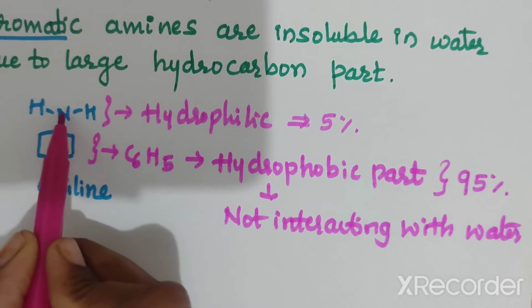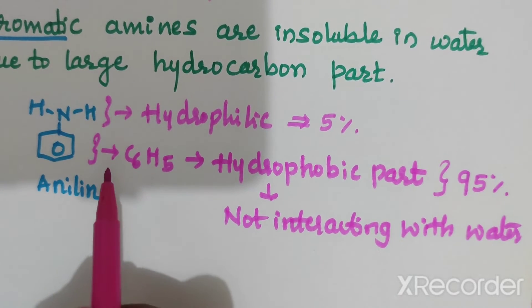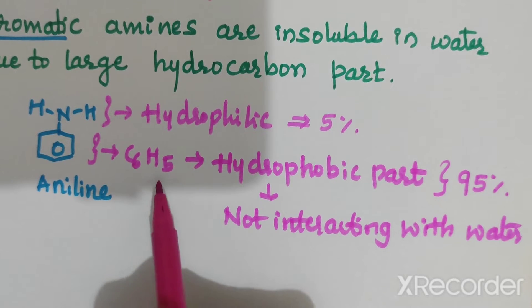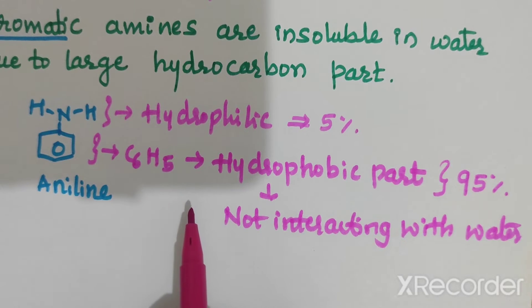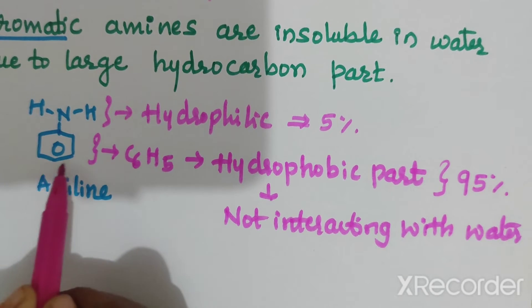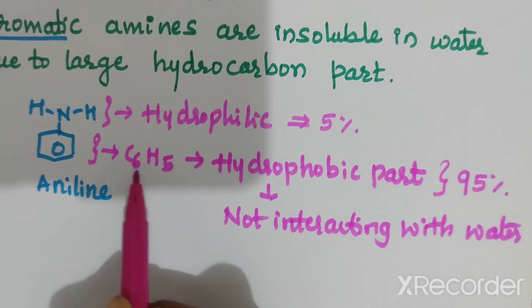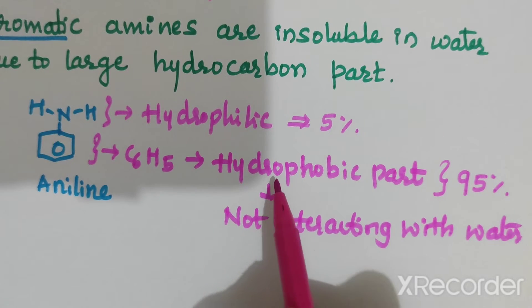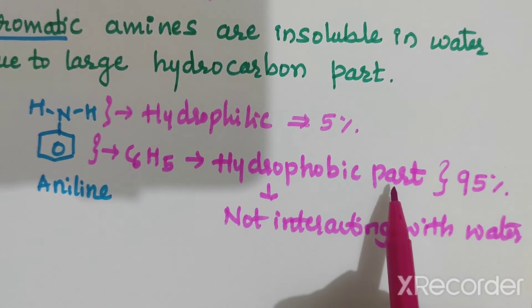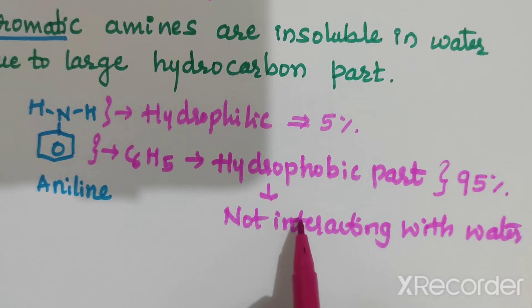Even though it is a hydrophilic part, which is not interacting with water, it is insoluble in water because of this large hydrocarbon. See here, this C6H5 is a large hydrocarbon, hence this, because of this hydrophobic part which is not interacting with water.